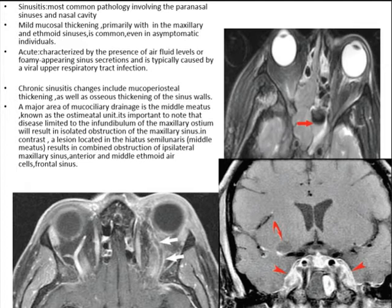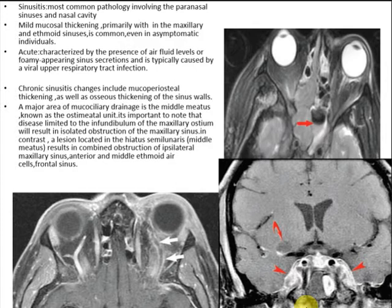Disease limited to the infundibulum of the maxillary osteomeatal unit will result in isolated obstruction of the maxillary sinus. While if the lesion is located in the hiatus semilunaris — the middle meatus — this will result in combined obstruction of the ipsilateral maxillary sinus, anterior and middle ethmoid air cells, and the ipsilateral frontal sinus. So if it is in the osteomeatal complex itself, there will be multiple sinuses affected, while involvement only of the maxillary infundibulum results in isolated maxillary sinus disease.